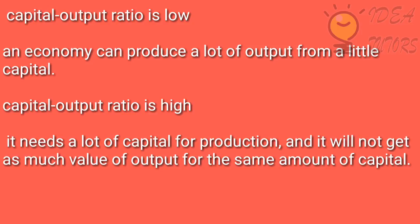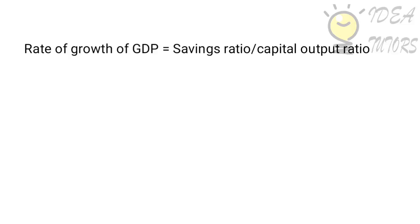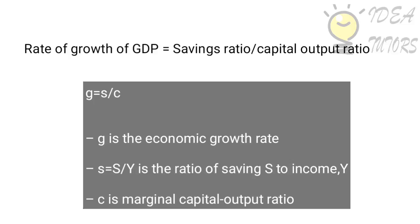The Harrod-Domar model says the rate of growth of GDP is the ratio of the savings ratio to the capital output ratio. G is the economic growth rate; S/Y is the ratio of saving S to income Y; and C is the marginal capital output ratio.